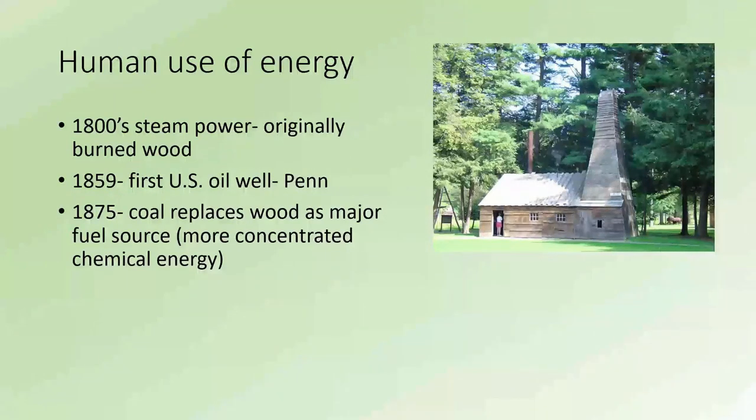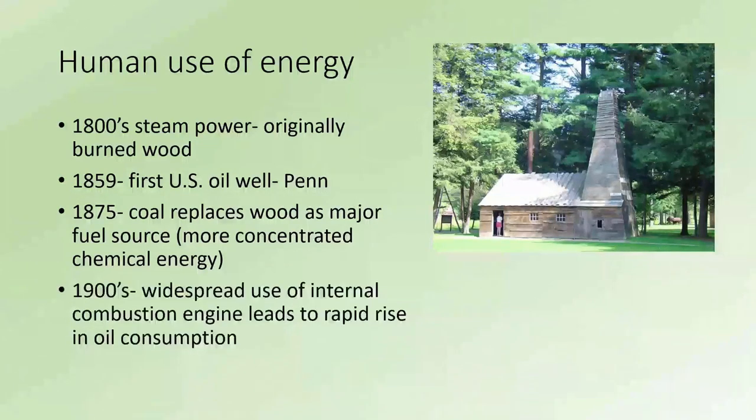1875, coal replaces wood as the major fuel source. This is a more concentrated form of energy and is much easier to carry around. You don't have to carry near as much - instead of sticking a whole bunch of wood in the burner box, the guy's just got to shove a little bit of coal. It's a much more efficient fuel source. In the 1900s, the widespread use of the internal combustion engine leads to the rapid rise in oil consumption, and that's kind of where we sit today.